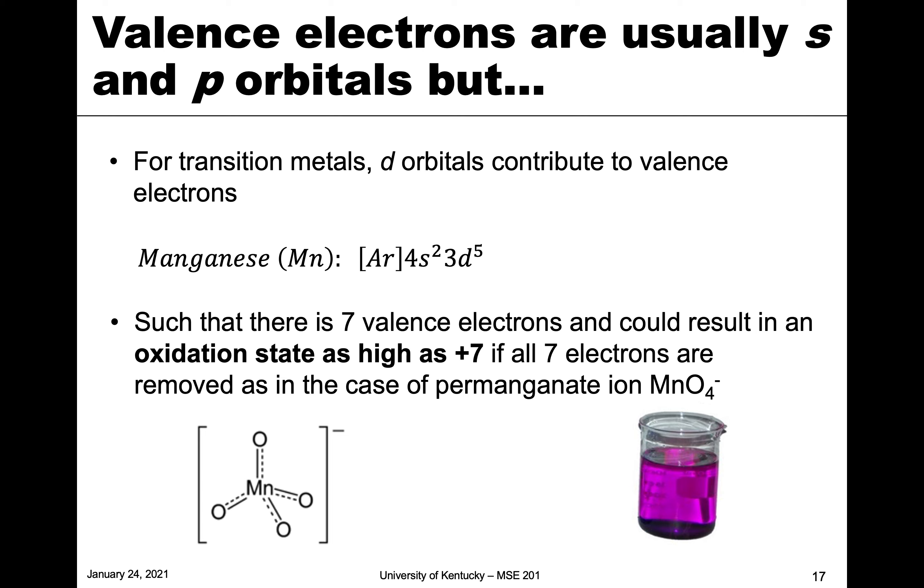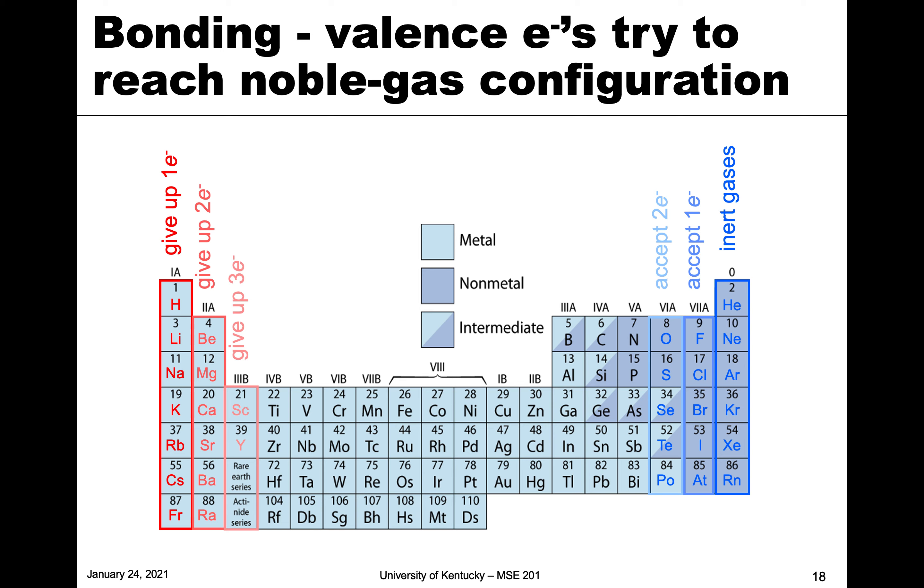If those are all removed, which can happen in permanganate, then we would have this very high oxidation state. So let's get to an introduction into bonding. Bonding is when various atoms try to bond together. The whole goal of this bonding is to try to reach what we term a stable configuration, and stable means that a shell is filled.